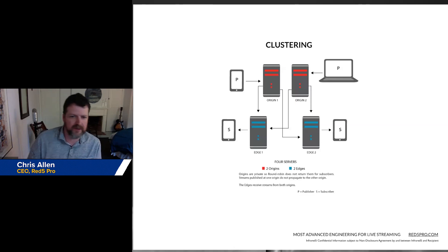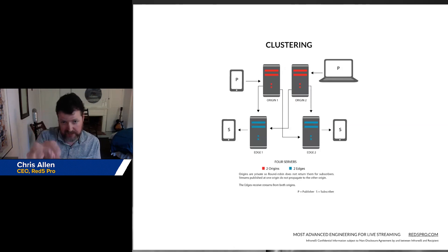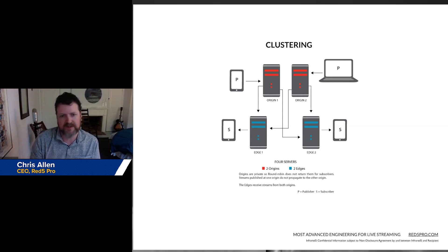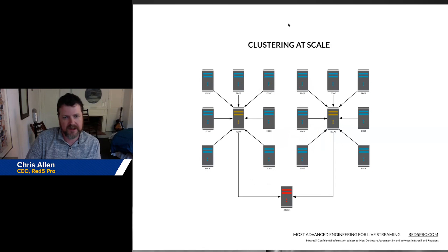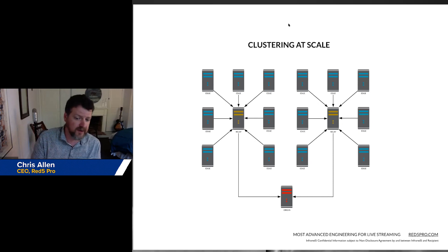But what we do is we use cloud instances. As you can see in this diagram, we've got origin instances — on AWS, these would be EC2 instances. The incoming streams go into origins, they get fanned out to edges, and then subscribers are connecting to those edges. To get massive concurrency, we put relays in the middle, which allows extra capacity beyond what an origin would be able to handle on its own. And this is how you can get millions of concurrent viewers using cloud.